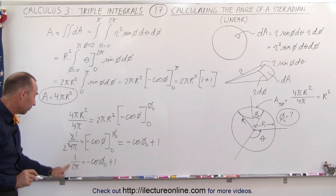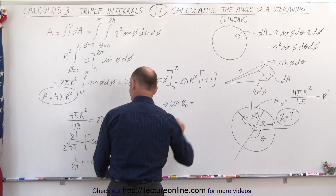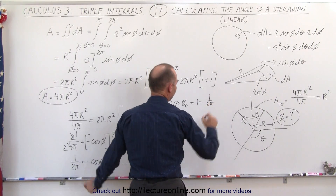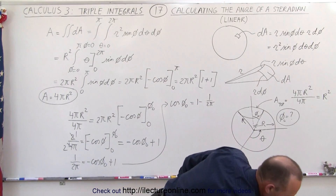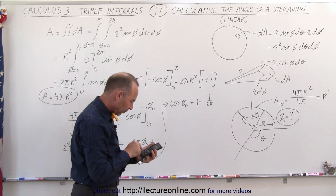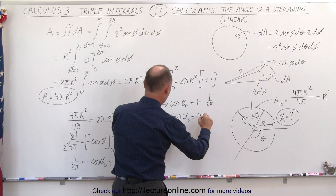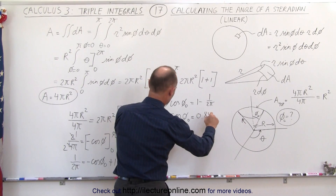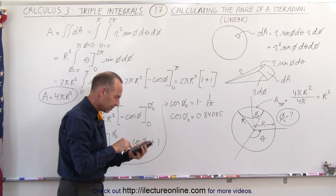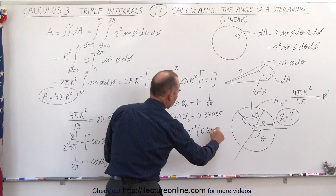We isolate cosφ₀ by rearranging, giving us cosφ₀ = 1 − 1/(2π). Calculating that: 1 divided by 2 divided by π, subtracted from 1, gives cosφ₀ = 0.84085. Taking the inverse cosine of that value, we get φ₀ = arccos(0.84085).